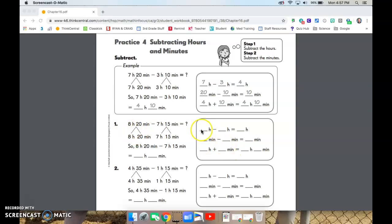So let's get going here with number one. I see eight hours minus seven hours, so that's going to be one hour. And I see 20 minutes minus 15. Twenty minus 15 is five. So one hour and five minutes.